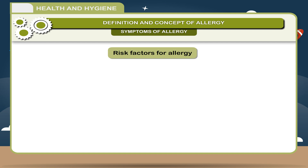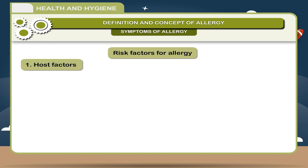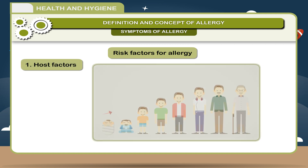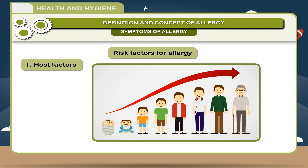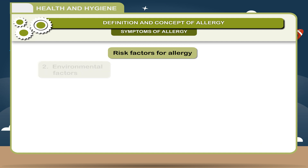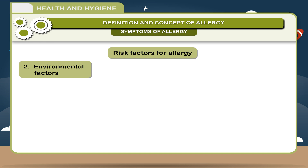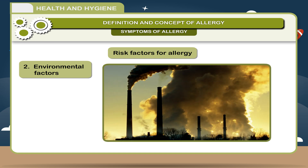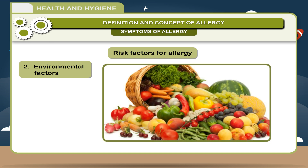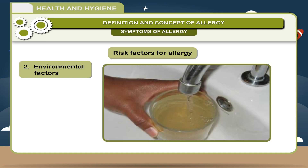Risk Factors for Allergy. There are two categories. 1. Host Factors — includes heredity, sex, and age. 2. Environmental Factors — includes pollution, allergen levels, dietary changes, and untreated drinking water.